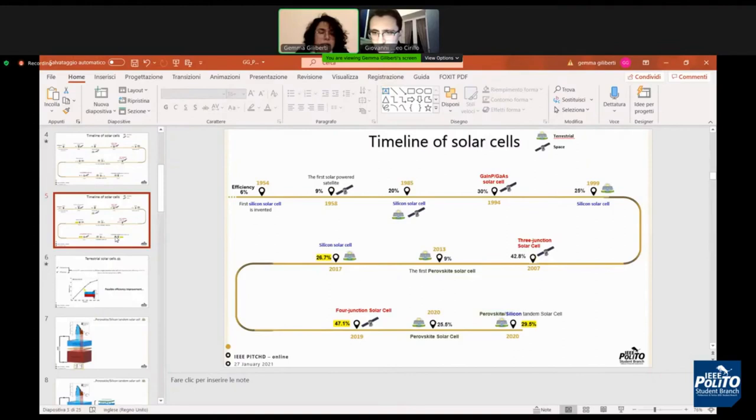Today it is very difficult to reach 47.1% for terrestrial solar cells because the manufacturing costs for this kind of solar cell are very high.